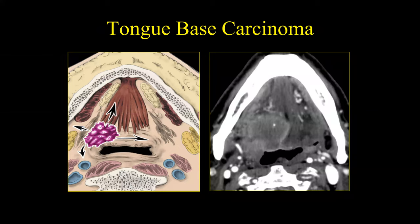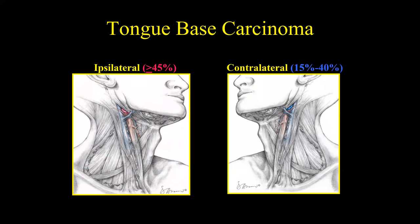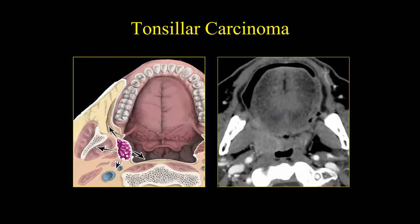For a large right-sided tongue base carcinoma, the ipsilateral neck and level 2 lymph nodes are most at risk. In oropharyngeal cancers, specifically tongue base cancers, the contralateral neck can also be involved — typically at level 2 — but ipsilateral involvement remains more common.